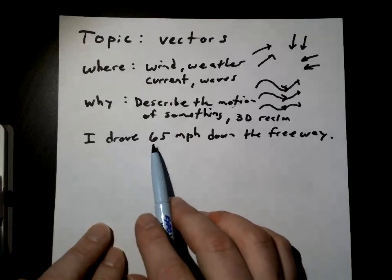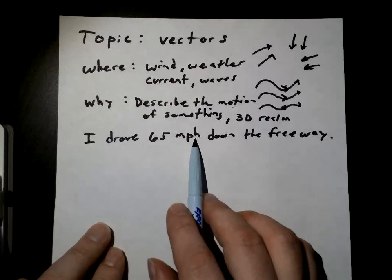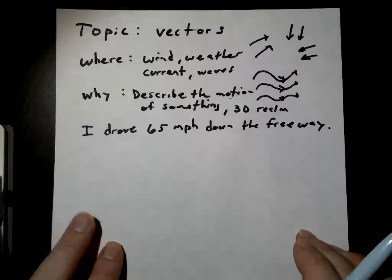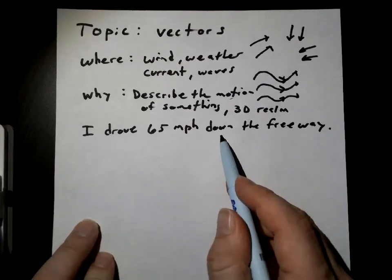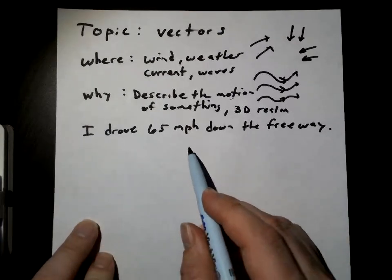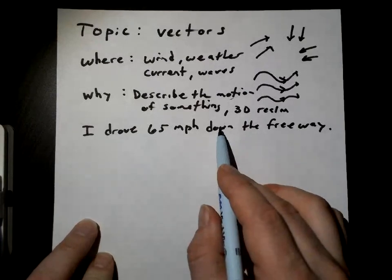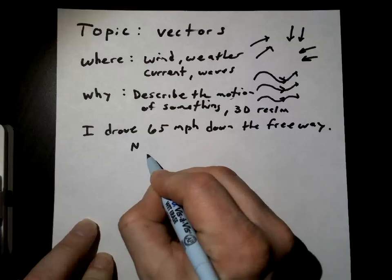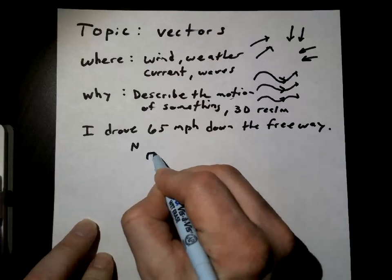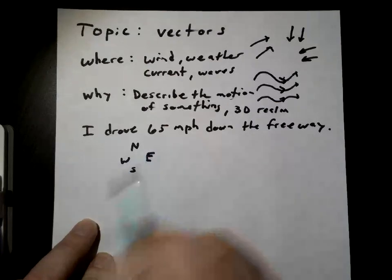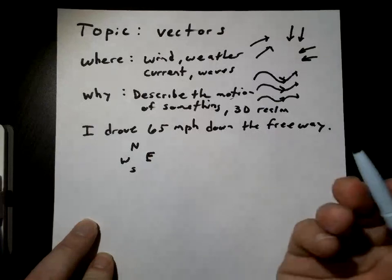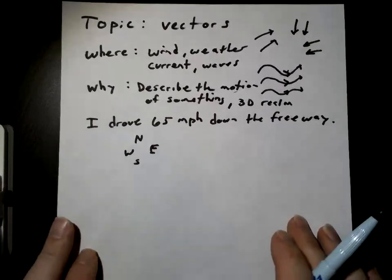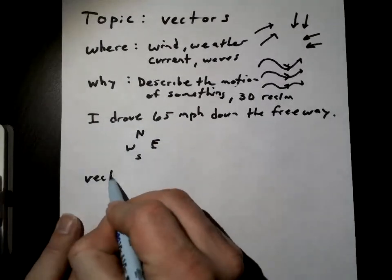Here's a question: if I drove 65 miles per hour down the freeway, you might wonder — where down the freeway? Is that north, south, east, or west? Did you drive north? Did you drive east? You need a direction. So the bottom line is: a vector needs direction.